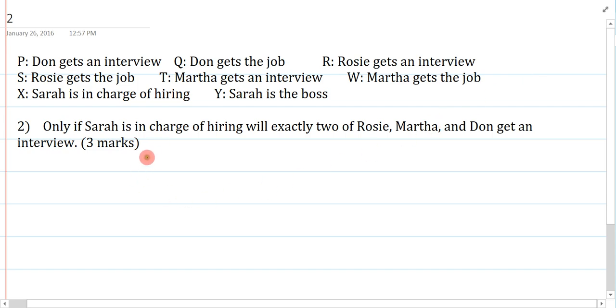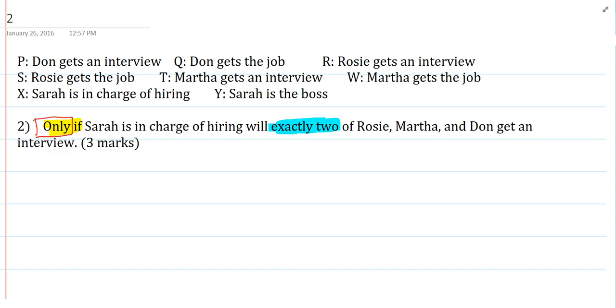Next. Only if Sarah is in charge of hiring, will exactly two of Rosie, Martha, and Don get an interview. So some obvious tricks here. The first is I have only, and that's paired with a connective only if. I have exactly two, which is a nice phrase that we need to know for numerical. And other than that, it's pretty straightforward.